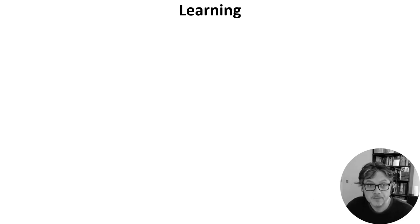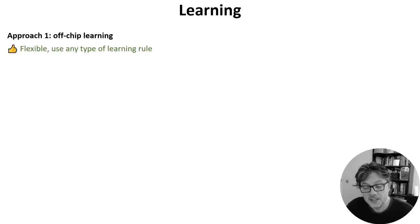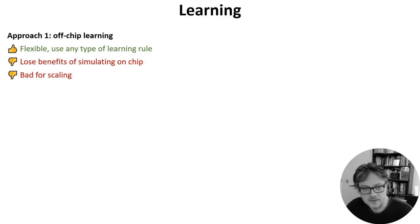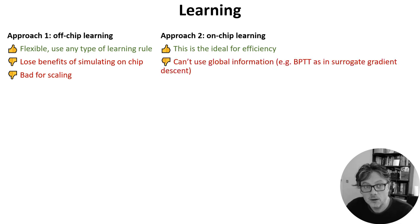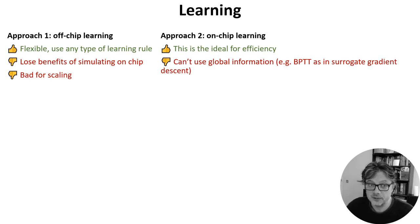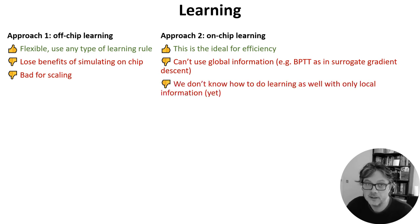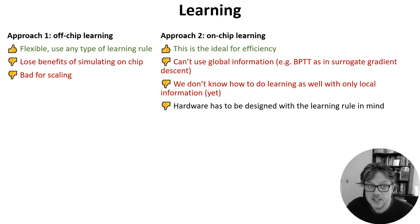The final ingredient we need is learning. The easiest thing to do is just do the learning off the neuromorphic device and copy the synaptic weights and other parameters across. This is very flexible because you can use any learning rule, but you lose the benefits of simulating on the neuromorphic device, which often limits scaling. The other approach is to do the learning on the chip itself. This is ideal from the point of view of efficiency, but we can't use global gradient information, which rules out learning rules like backprop through time used in surrogate gradient descent. In a way this shouldn't be a problem because the brain also uses only local learning rules — but even if the brain knows how to do this, we don't yet know how to do it as well as with global information. Also, local information needs to be managed and transmitted to the right places, which has to be incorporated into the hardware design, limiting flexibility.